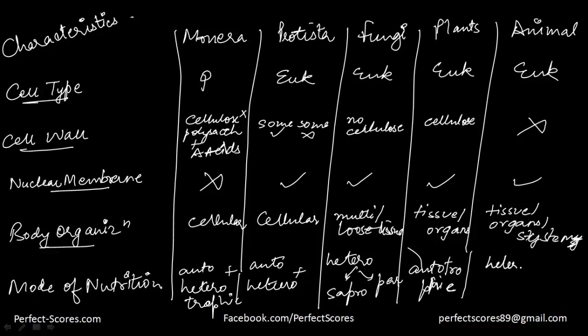Animals are heterotrophic. All kinds of insects, worms, birds, animals — all these are part of Animalia. It can be either holozoic like human beings, where we just take in food, or it can be saprophytic as well. So all these kinds of nutrition modes are present. Basically, this is the difference between those five kingdoms.